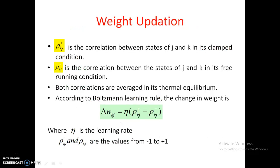For the weight update rule, let rho_kj-plus be the correlation between states of neurons j and k in the clamped condition, and rho_kj-minus be the correlation in the free running condition. Both correlations are averaged at thermal equilibrium. According to the Boltzmann learning rule, the change in weight is: delta w_kj equals eta times (rho_kj-plus minus rho_kj-minus), where eta is the learning rate and the correlation values range from minus one to plus one.